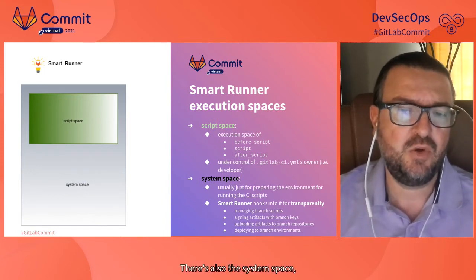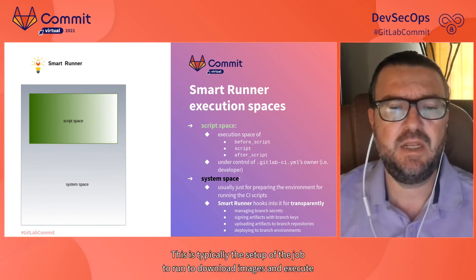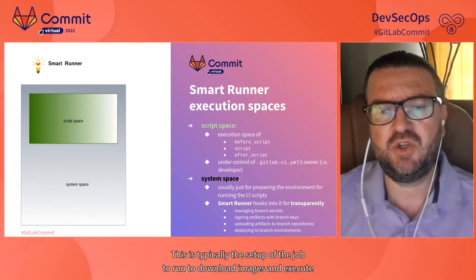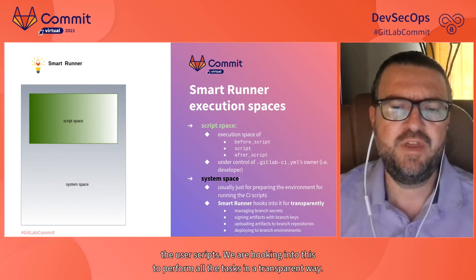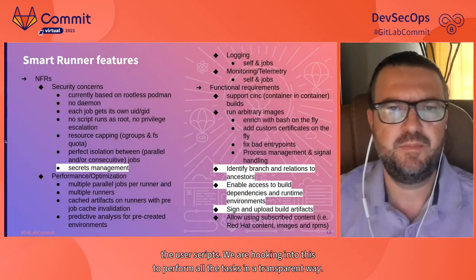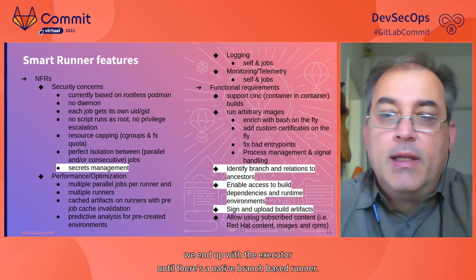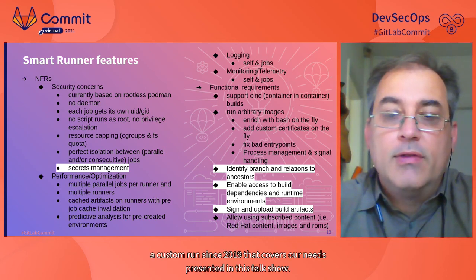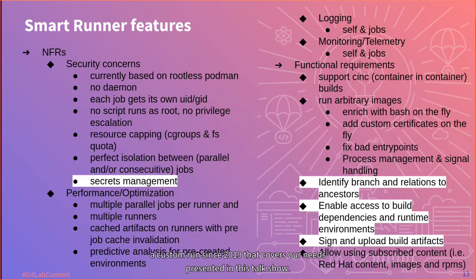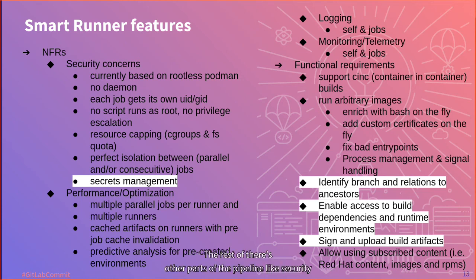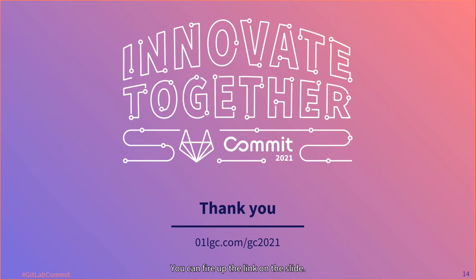There is also the system space, which is the non-user-serviceable part of the runner. This is typically used to set up the job, download images, and execute user scripts. We hook into this to perform all required tasks in a transparent way. At the end of the day we end up with a custom executor. Luckily, we have been developing a custom runner since 2019 that covers our needs presented in this talk. The features needed for the concepts presented are highlighted; the rest address other parts of the pipeline like security, performance, or subscription management. We hope you enjoyed the talk — for further information you can follow the link on the slide. Many thanks for watching.